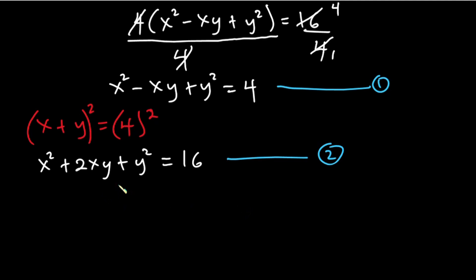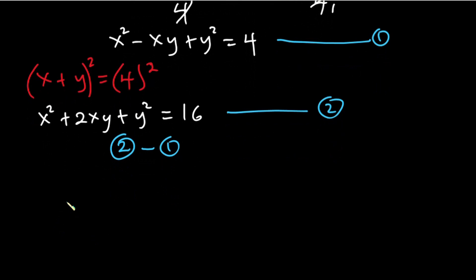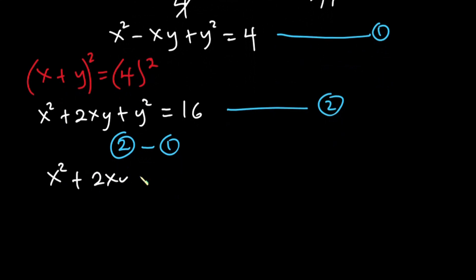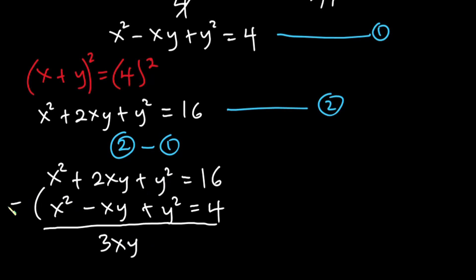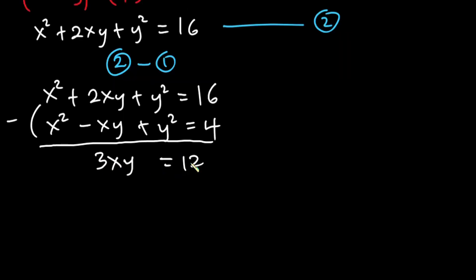Now equation 2 minus equation 1: x squared plus 2xy plus y squared equals 16, minus x squared minus xy plus y squared equals 4. x squared minus x squared is 0, then 2xy minus negative xy is 3xy, and y squared minus y squared is 0. Then 16 minus 4 is 12. So we have 3xy equal to 12. Dividing each side by 3, we get xy is equal to 4.